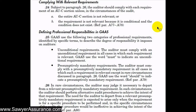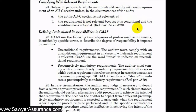In this video we're going to explore how we comply with relevant requirements. This is AU-C section 200.24 through 26. An auditor should comply with each requirement of an AU-C section unless, in the circumstances of the audit, the entire AU-C section is not relevant, or the requirement is not relevant because it is conditional and the condition does not exist.